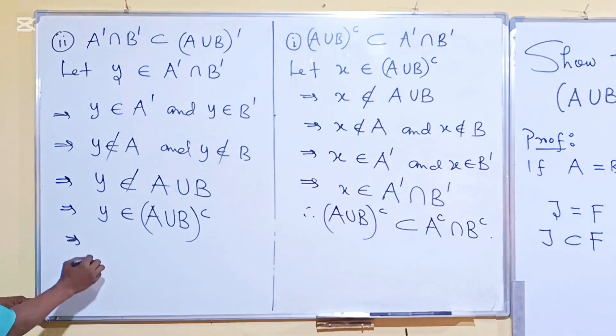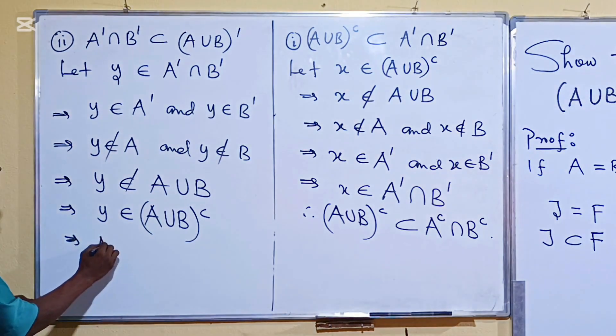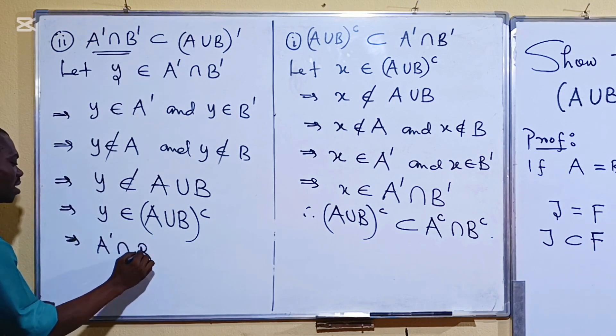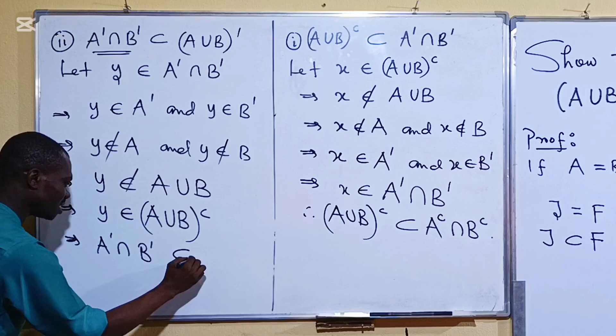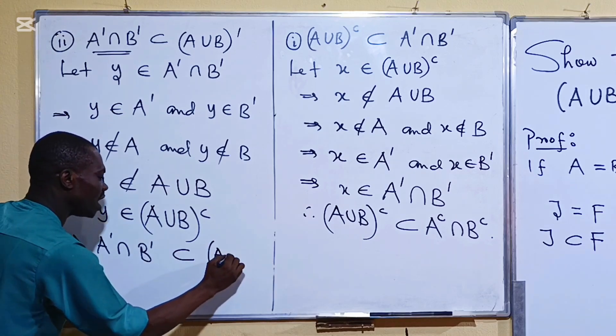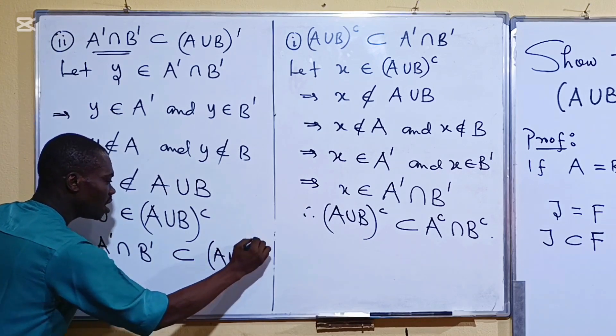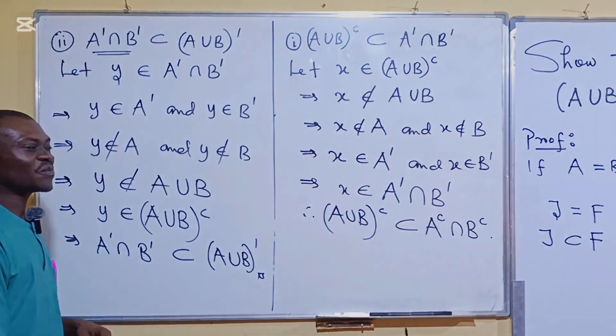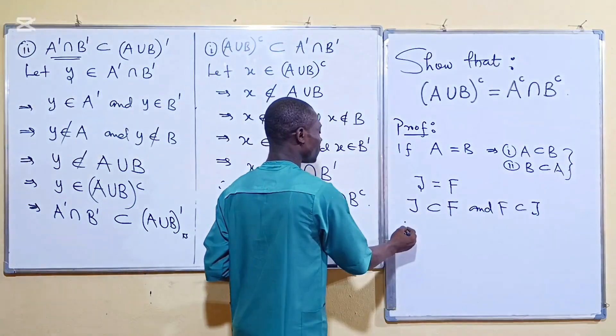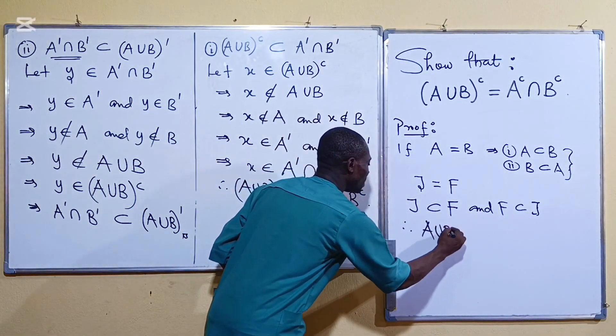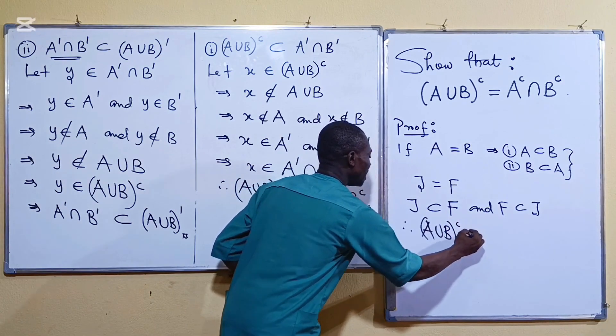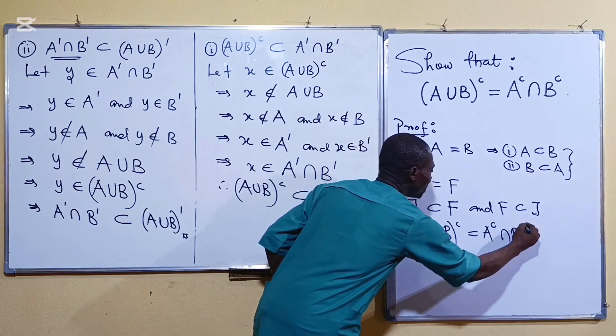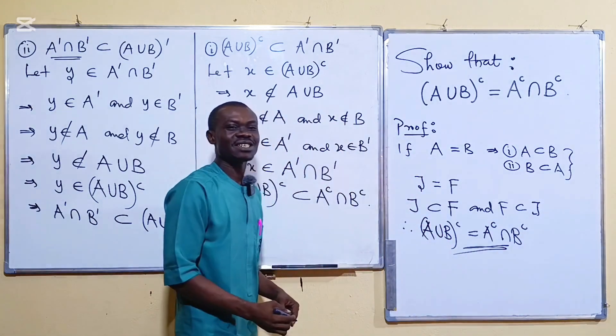So you have established that your A complement B complement is a subset of A union B complement. And that is the second part of the proof. Therefore, we have shown that our A union B complement is equal to A complement intersection B complement as required.